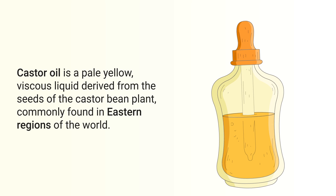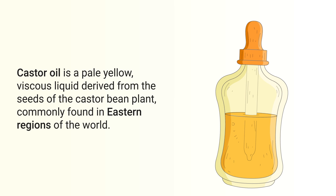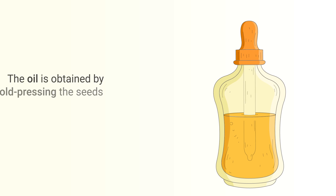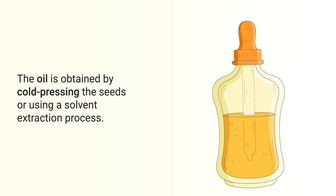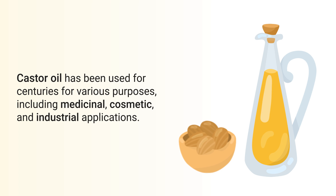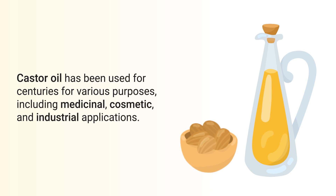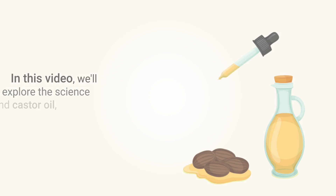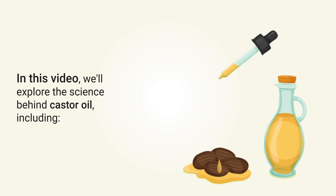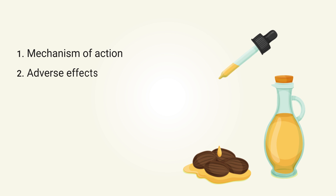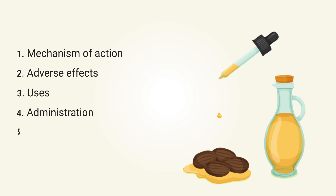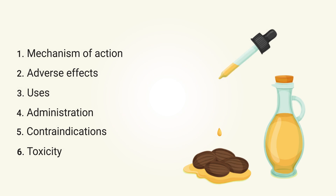Castor oil is a pale yellow viscous liquid derived from the seeds of the castor bean plant, commonly found in eastern regions of the world. The oil is obtained by cold pressing the seeds or using a solvent extraction process. Castor oil has been used for centuries for various purposes including medicinal, cosmetic, and industrial applications. In this video we'll explore the science behind castor oil including the mechanism of action, adverse effects, uses, administration, contraindications, toxicity, and more.